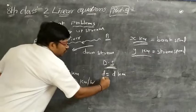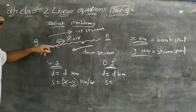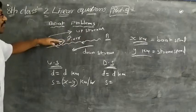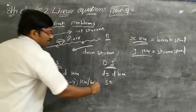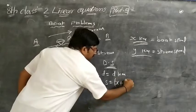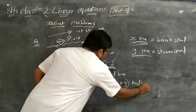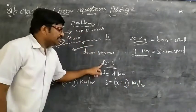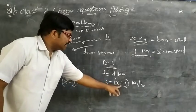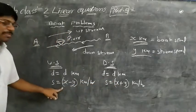In downstream, the stream speed adds to the boat speed. So the speed of the boat downstream equals boat speed plus stream speed — that is X plus Y km/h.